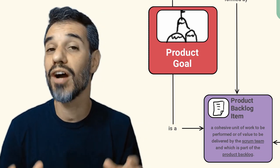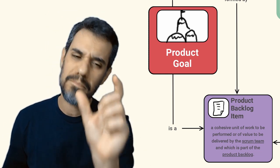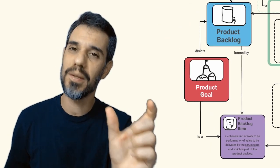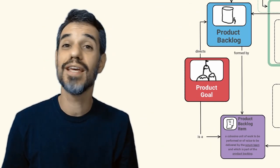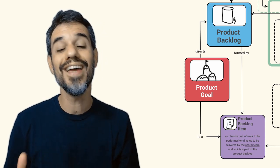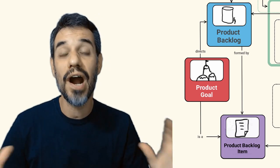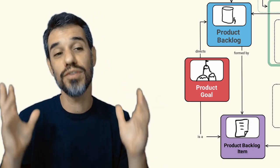We may say that every product backlog item is a small part of work that must be delivered by the product team. We may say also that the commitment product goal is a product backlog item, because they are all part of the product backlog.